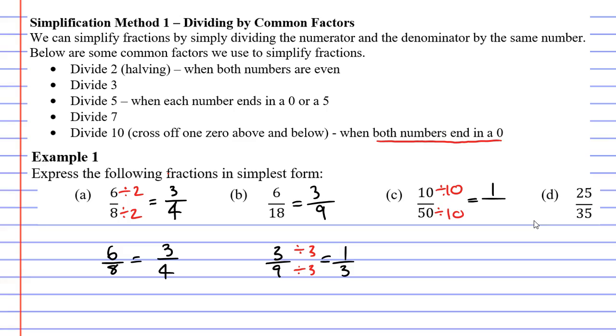10 divided 10 is 1, and 50 divided 10 is 5. That worked out really well. This is now in simplest form.